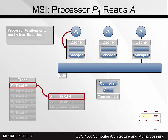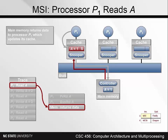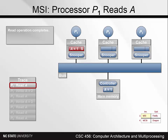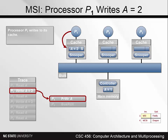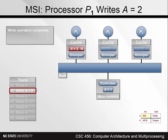First, P1 reads A. Since P1 does not have A cached, this is a cache miss and results in a bus transaction to fetch the block containing A. Main memory responds and forwards the block to P1. P1's cache caches the line containing A in shared state. Next, P1 changes the value of A to 2. This is a processor write. Since A is in the cache, the write is directed to the cache, but since the line was in state S, it had to change to state M. Thus, a bus read X transaction is required for P1 to get exclusive access to A.